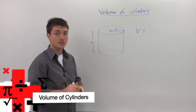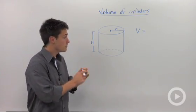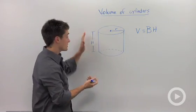Calculating the volume of a cylinder is pretty similar to calculating the volume of a prism. We could say that the volume is equal to its base area times its capital H, which is its height.